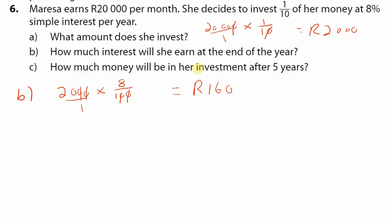Now number C, how much money will be in an investment after 5 years? So simple interest means every year it will be exactly the same amount of interest that you obtain. So it's 160 for one year. So for 5 years, it will be 160 rand times 5. So 100 times 5 is 500, 60 times 5 is 300. So it's 800 rand.